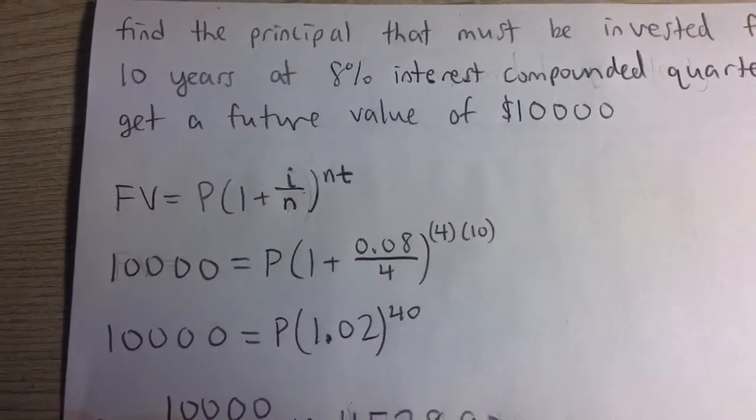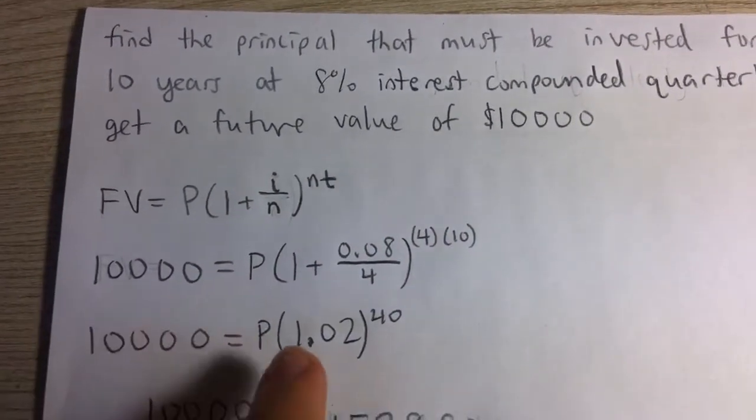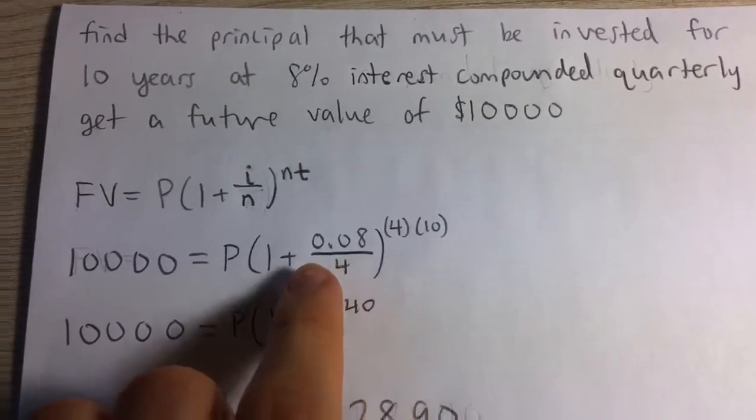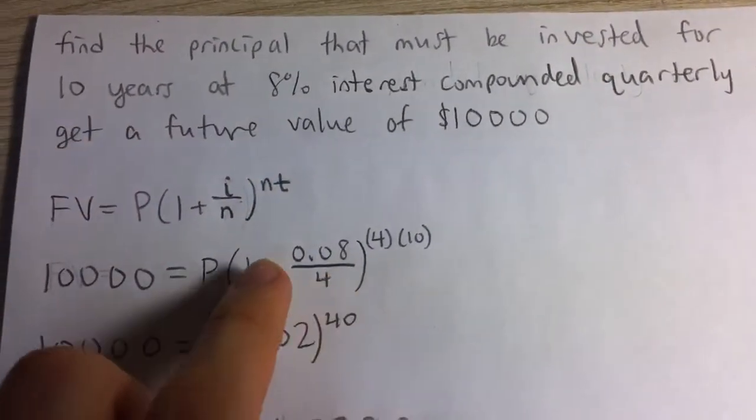What we have here is a future value of $10,000, and we're trying to solve for P. So we plug in all the other values. The interest rate is 8% per year, that's i.